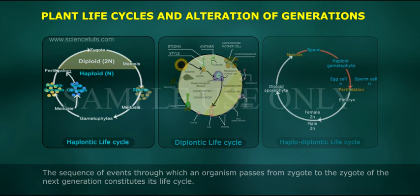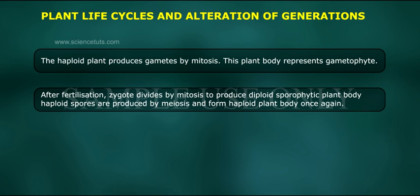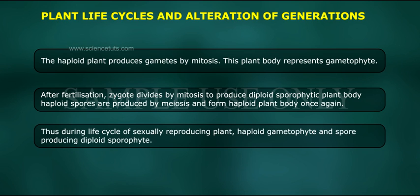The haploid plant produces gametes by mitosis. This plant body represents the gametophyte. After fertilization, the zygote divides by mitosis to produce a diploid sporophytic plant body. Haploid spores are produced by meiosis, forming a haploid plant body once again. Thus, during the life cycle of a sexually reproducing plant, a haploid gametophyte and a spore-producing diploid sporophyte alternate.